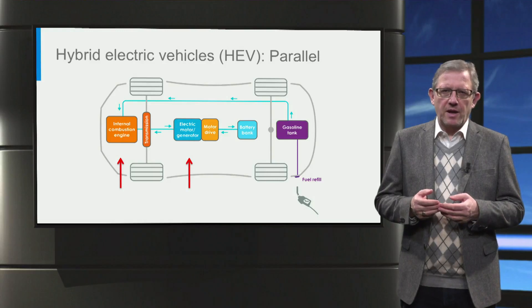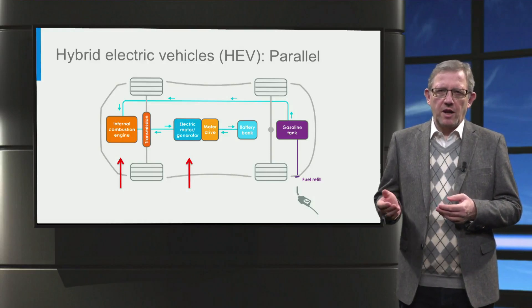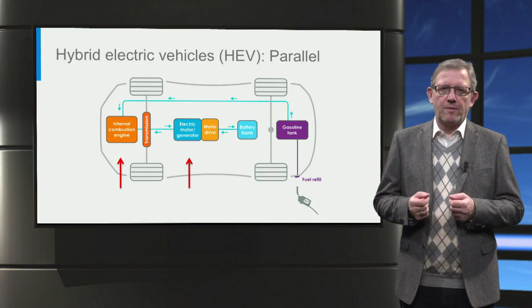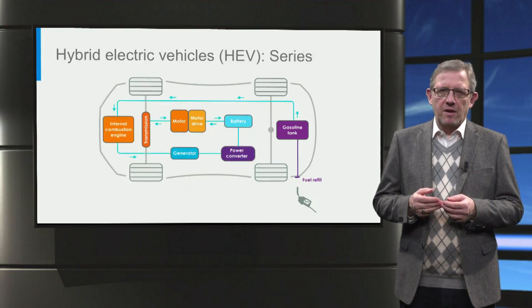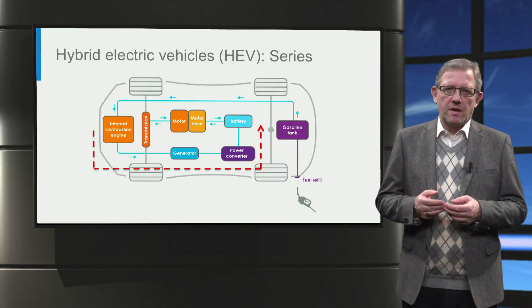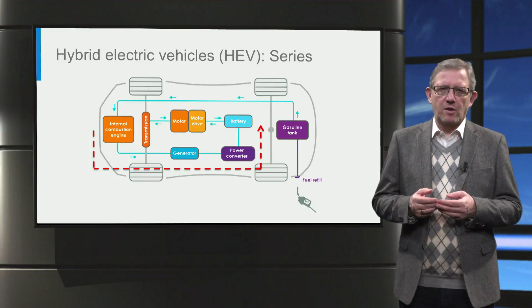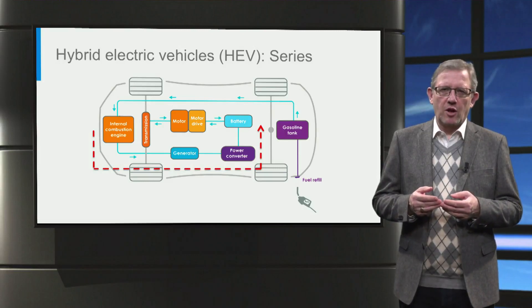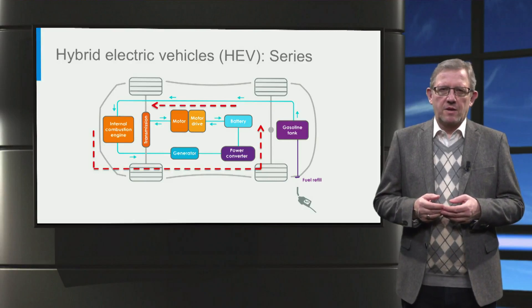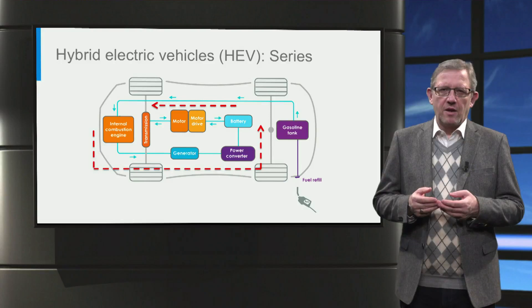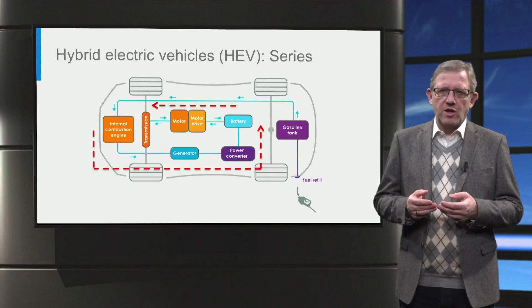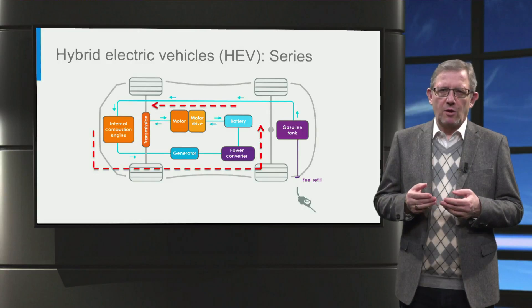What we have just seen is a parallel hybrid architecture where both the engine and the motor can power the wheels at the same time. A series hybrid electric vehicle, on the other hand, works differently. The internal combustion engine is used to drive a generator and provide electrical power for the traction motors and to charge the battery. This is a common propulsion method which has been used in locomotives for many years. The traction motor is the only power supply unit with a direct connection to the wheels. The advantage is that the internal combustion engine can be operated at its most efficient point to generate the necessary current for driving the traction motor or charging the battery.